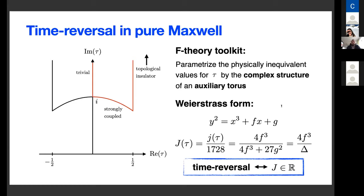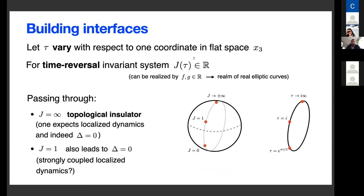To construct interfaces, we vary tau along a single spatial coordinate, restricting tau to the time reversal invariant subspace. In the full moduli space CP¹, we vary tau on the real subdomain where j is real. Since j is given by f and g in the Weierstrass equation, this is realized for f and g real, hinting at the realm of real elliptic curves — elliptic curves defined over the reals rather than the complex numbers.